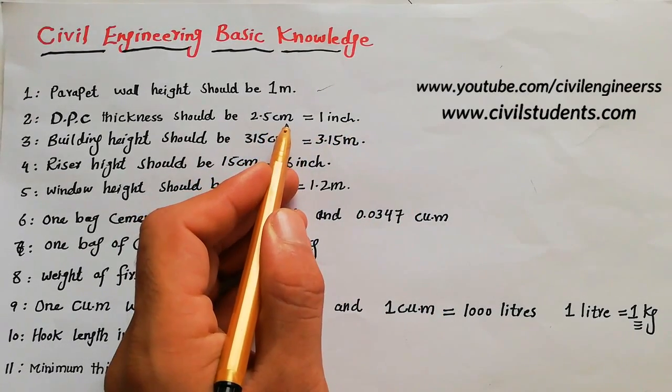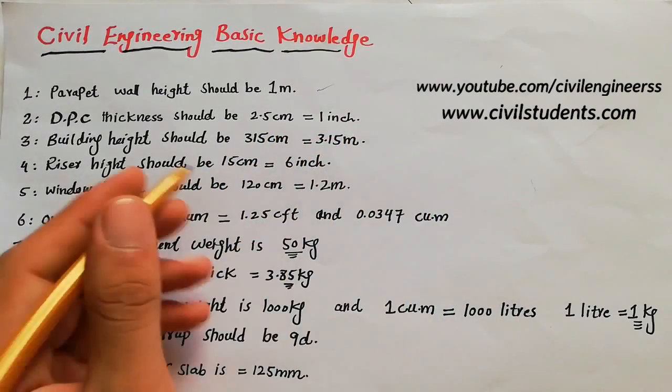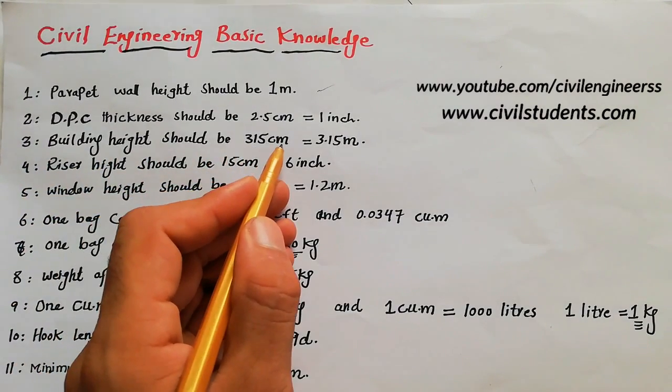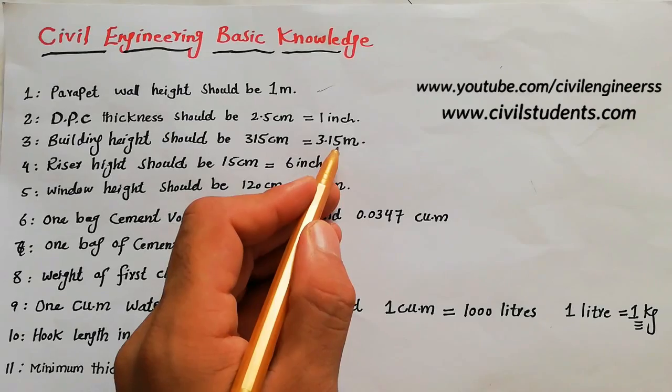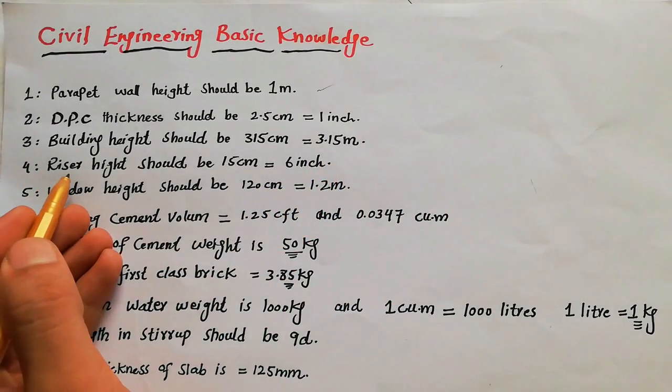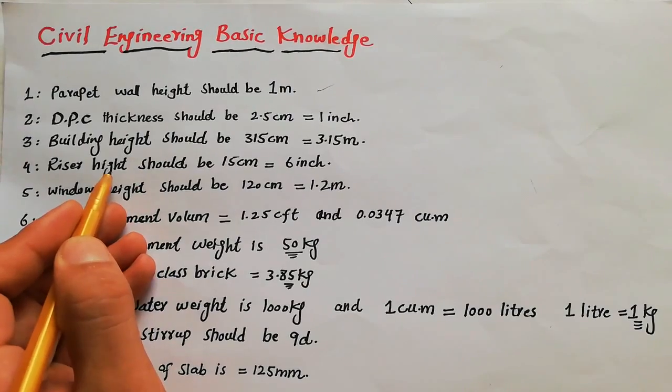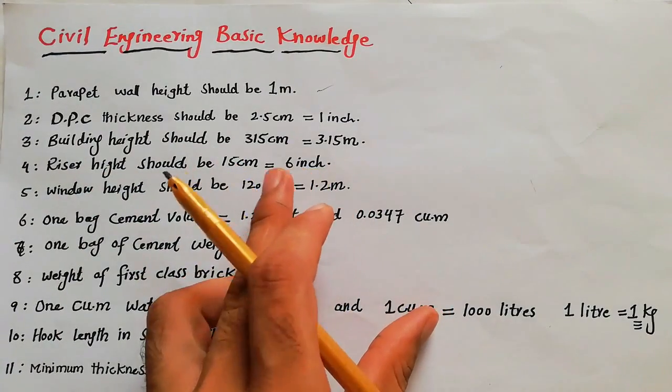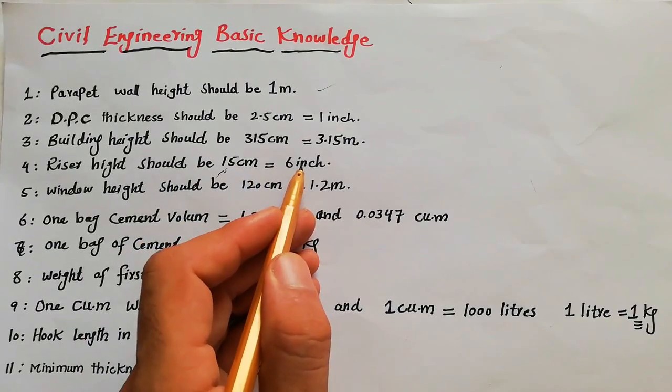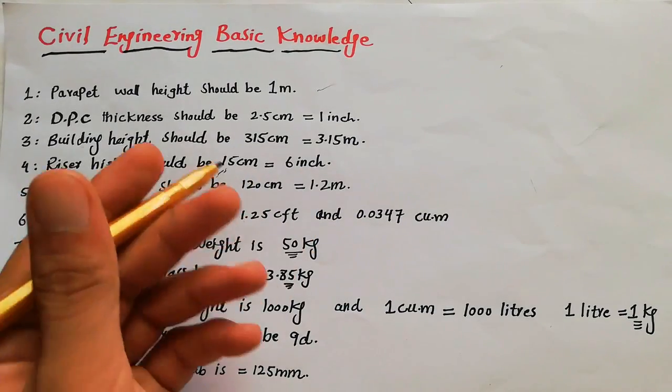Third: building height should be 315 centimeters, which means 3.15 meters. And the fourth one: riser height in staircase should be 15 centimeters, which is equal to 6 inches. These are very important, some basic knowledge.